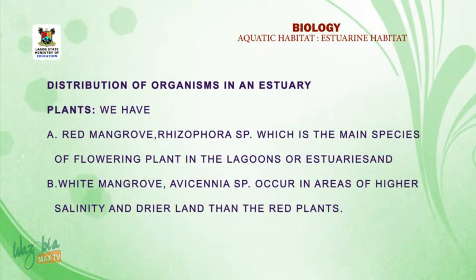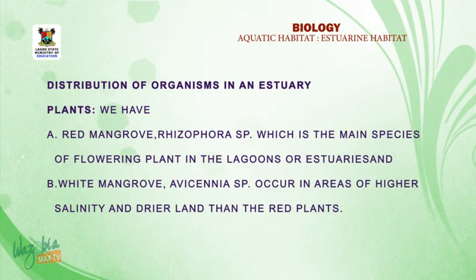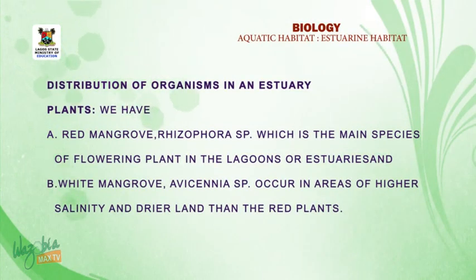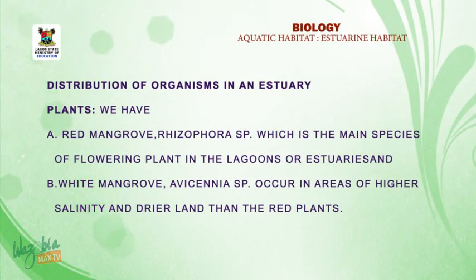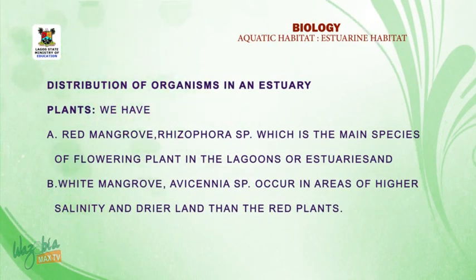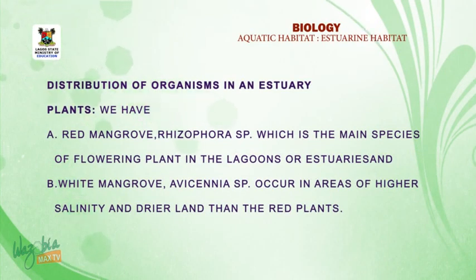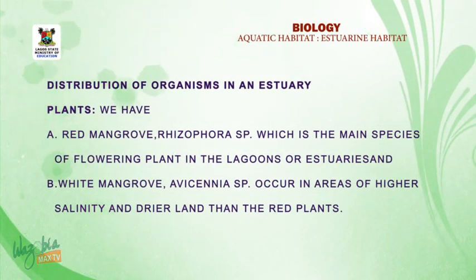Now let's look at the distribution of organisms in an estuary. Under plants: we have red mangrove — Rhizophora species — which is the main species of flowering plants in the lagoon. The second is white mangrove — Avicennia species. White mangrove occupies areas of high salinity and drier land compared to red mangrove, and is common in high-salinity areas.